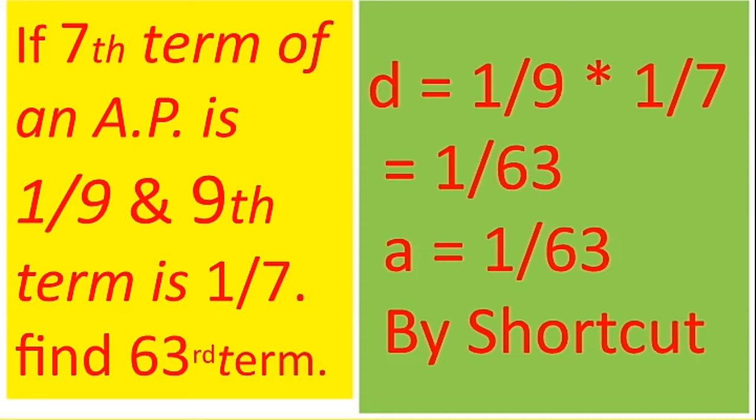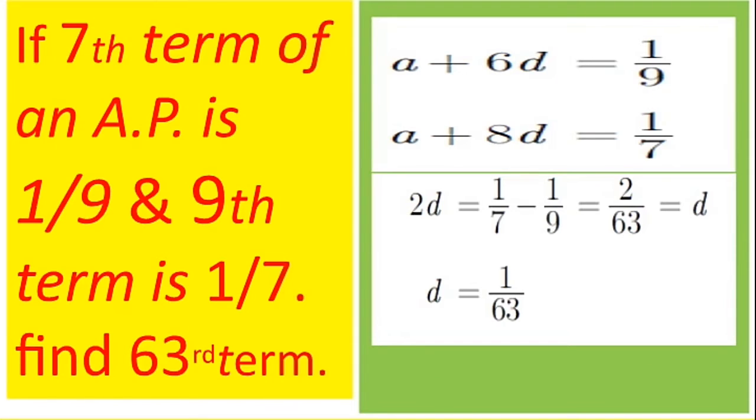So you won't believe, so let us go with the mathematical proof. The 7th term is A plus 6D equal to 1 by 9, and the 9th term is A plus 8D equal to 1 by 7. Once we solve or subtract this,